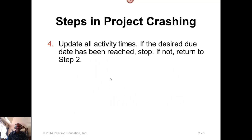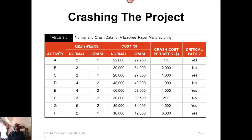Repeat this process until the desired completion time is achieved. Here is an example with activities A through H, each having a normal time and a crash time. The crash time represents the smallest possible time by which an activity can be completed.